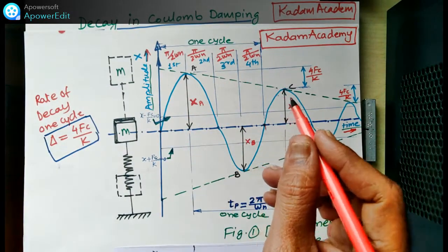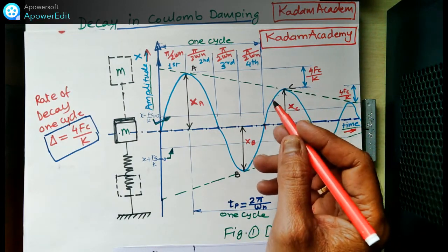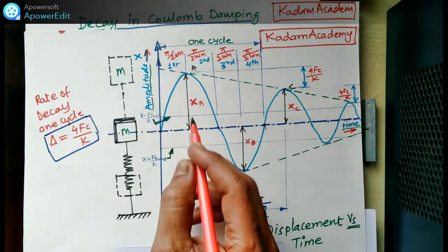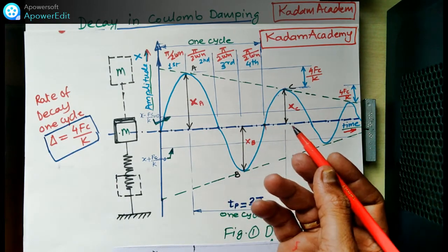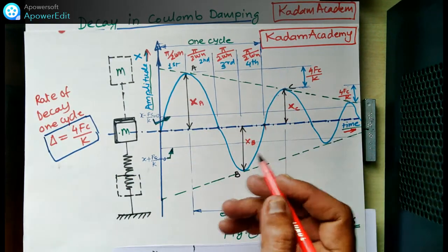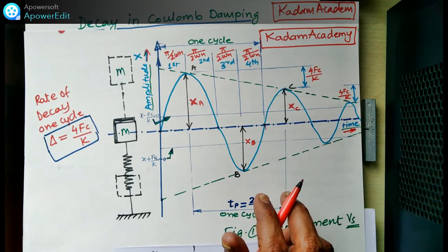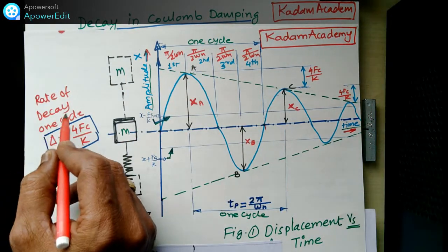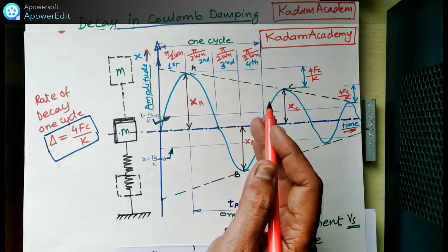In that previous lecture I covered in detail what Coulomb damping is, how the equation of motion for Coulomb damping is derived, how much the total amplitude reduces per cycle, and how to calculate the natural frequency omega_n. Here we focus on the decay in Coulomb damping — the rate of decay per cycle.